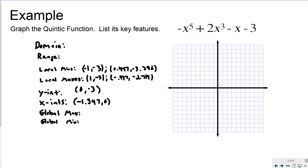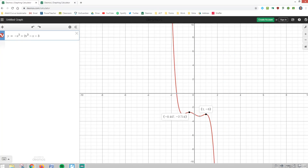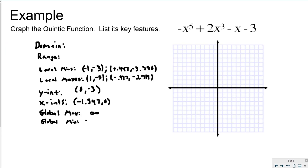So I've got all my key information: y-intercept, local min, local max. The global max, if we look at the graph, is positive infinity — you can see it heads up towards infinity. And it also heads down towards infinity in the other direction, so the global minimum is negative infinity. That means my range is negative infinity to infinity, and my domain is also negative infinity to infinity.